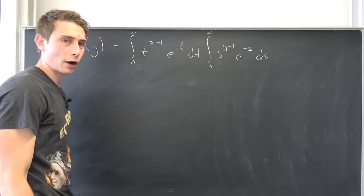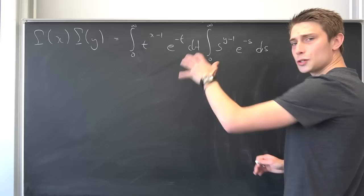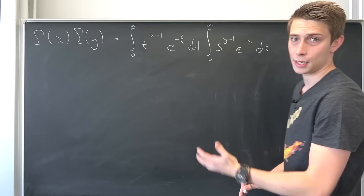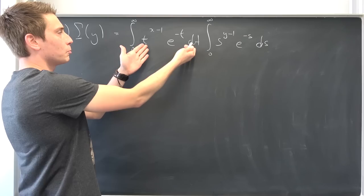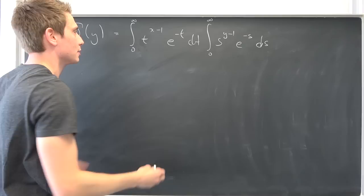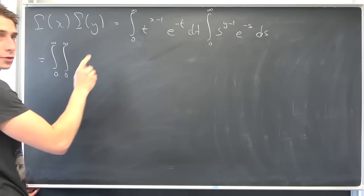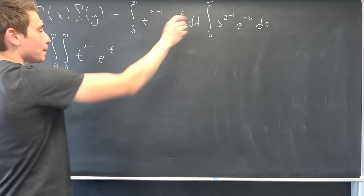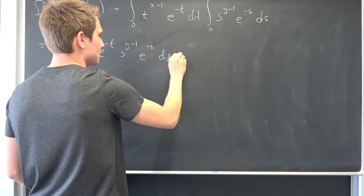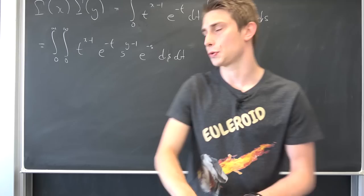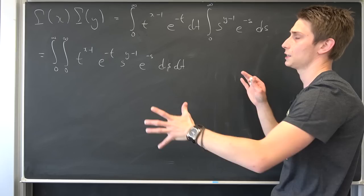Okay, this is what we have right now. Those integrals at the moment are independent of each other, so we can apply Fubini's theorem and bring those together into some multivariable calculus. With respect to this integral, this one is just a constant, so why not track those together? Now we have an integral from t running from 0 to infinity, of an integral from s running from 0 to infinity, of t to the x minus 1 times e to the negative t, times s to the y minus 1 times e to the negative s, dt ds. Don't forget the order of integration — first the inner integral and then the outer one.